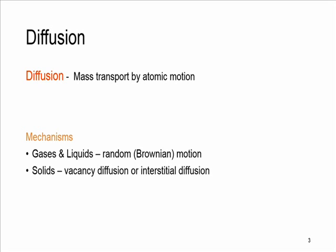The diffusion mechanism for gases and liquids is based on random Brownian motion. In solids we have two main mechanisms: vacancy diffusion and interstitial diffusion. In vacancy diffusion, an atom moves from a normal lattice position to an adjacent vacant site.